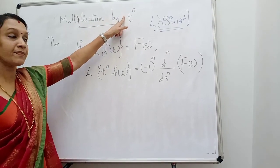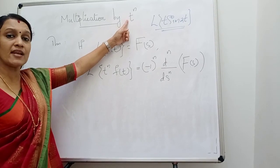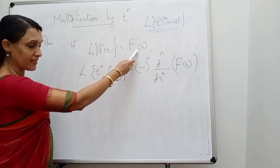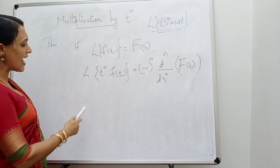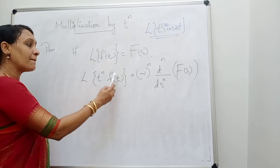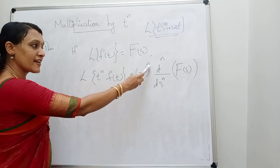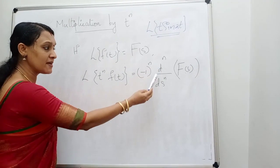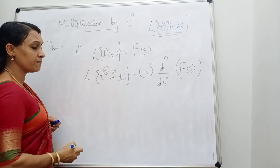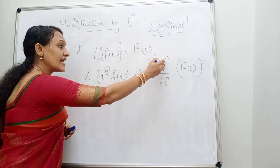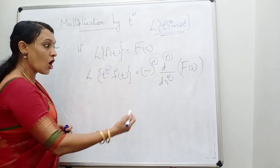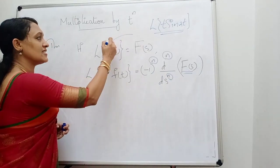Multiplication by t raised to n: if any function is multiplied by t raised to n, what is its Laplace transform? We have the theorem. If L{f(t)} = F(s), then L{t^n · f(t)} is equal to (-1)^n into d^n/ds^n of F(s). What is F(s)? F(s) is L{f(t)}.